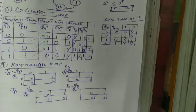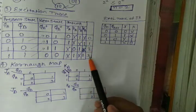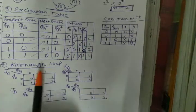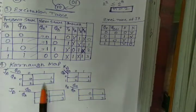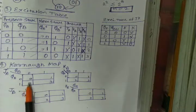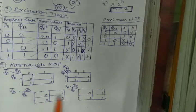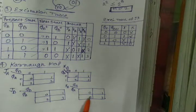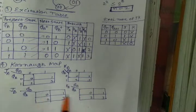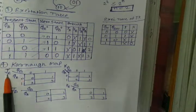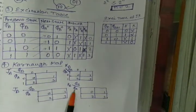Now we will make Karnaugh maps. We will have to make 4 Karnaugh maps: one for JA, one for KA, one for JB, and one for KB — two for first flip-flop and two for second flip-flop.